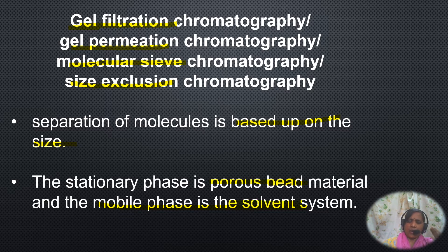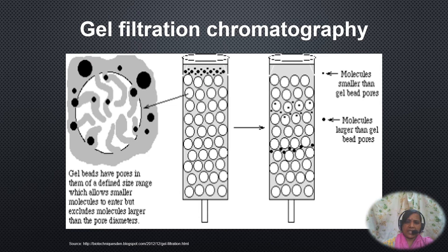In gel filtration or column chromatography, the stationary phase is the gel or porous bead material present inside the glass column, whereas the buffer used for movement of molecules is the mobile phase. The column is filled with spherical porous beads packed with buffer, which is present both inside the pores and in the spaces between the beads.